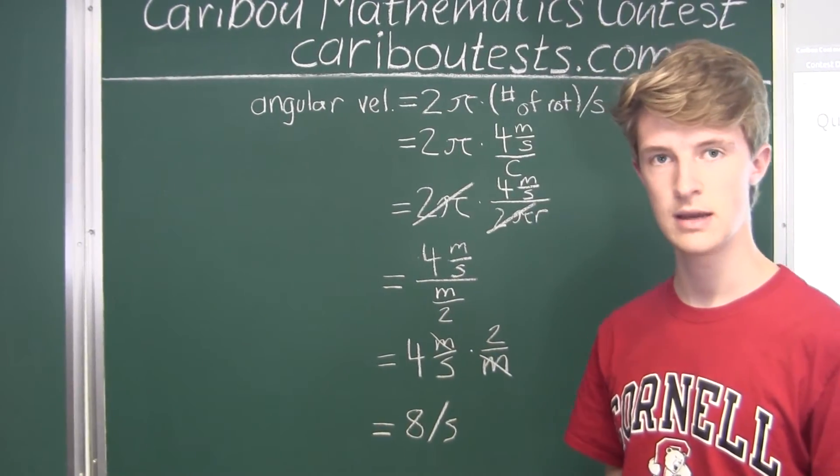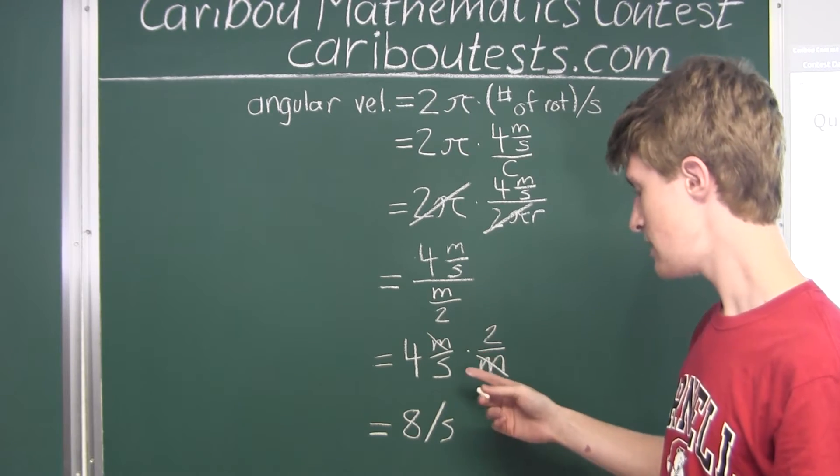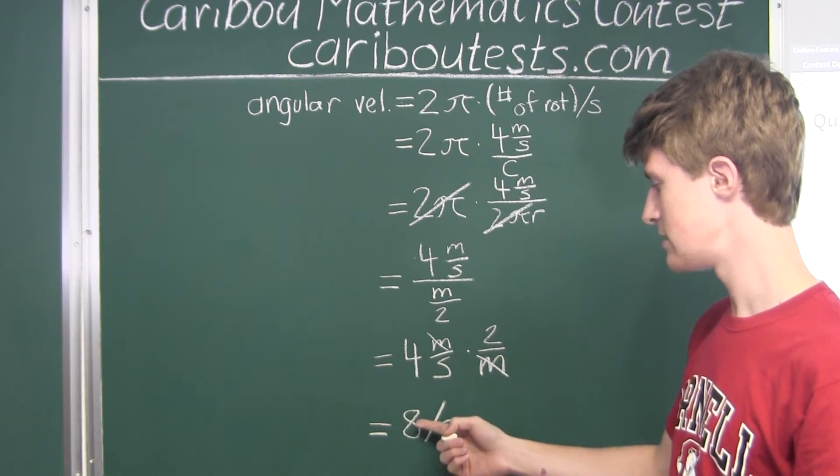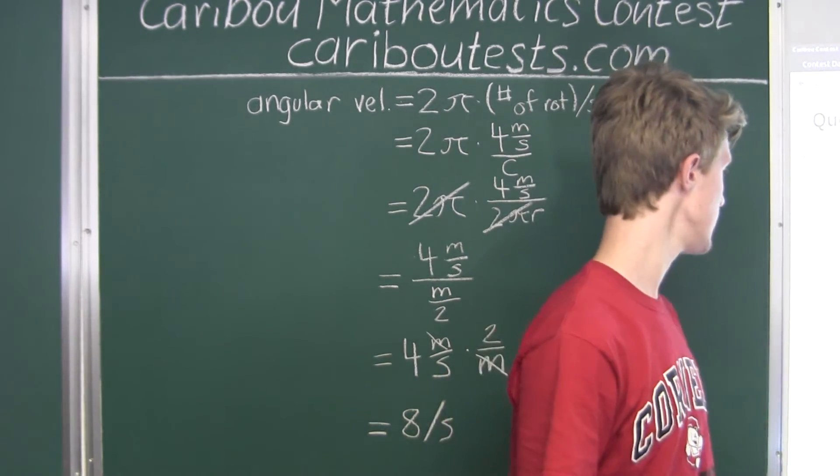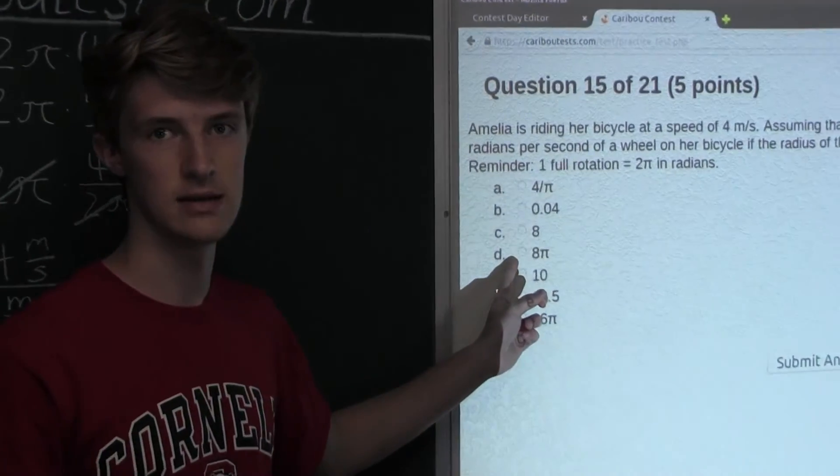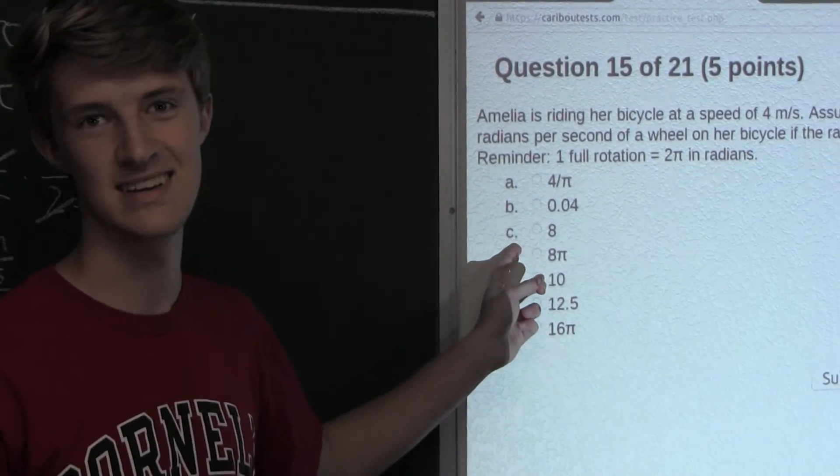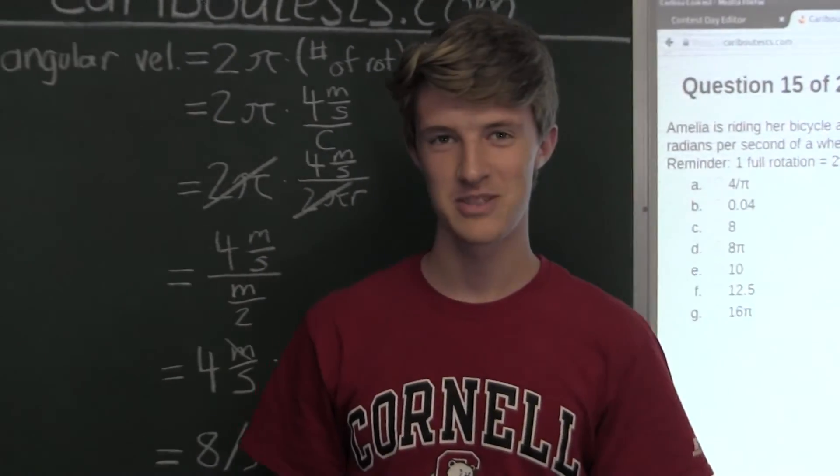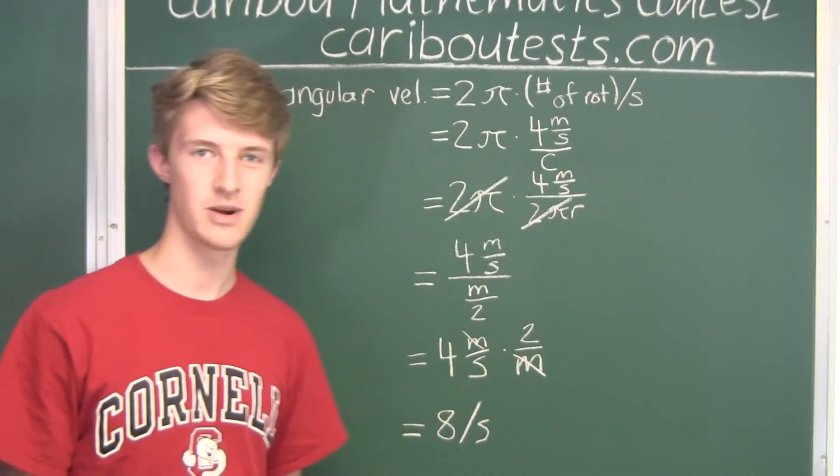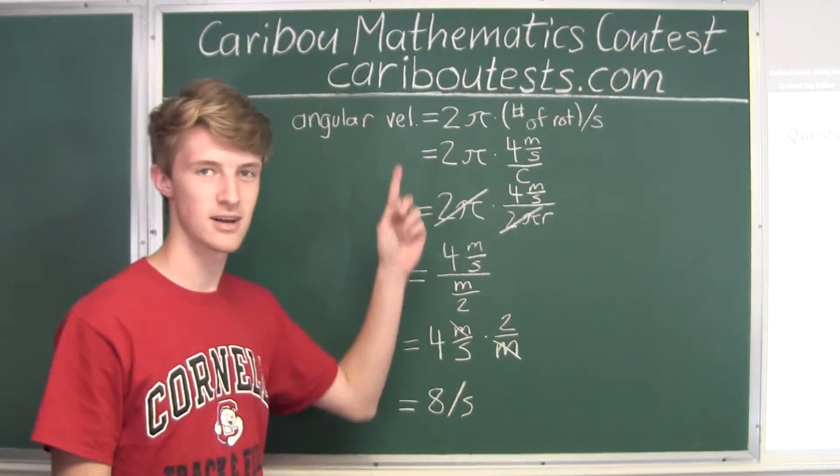And that means that the angular velocity in radians per second is 8, as this is 8 radians per second. So, the answer is 8, which is option C. If you'd like to learn more about this contest, please feel free to visit our website at cariboutests.com.